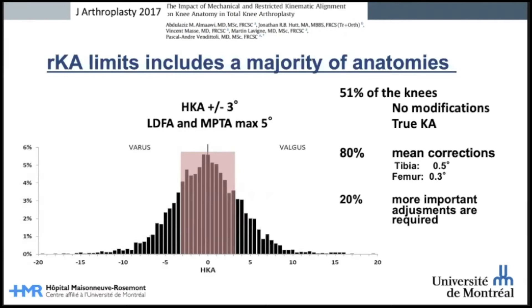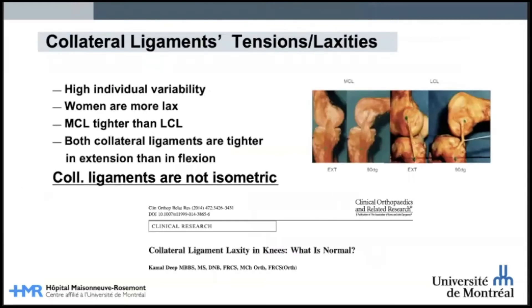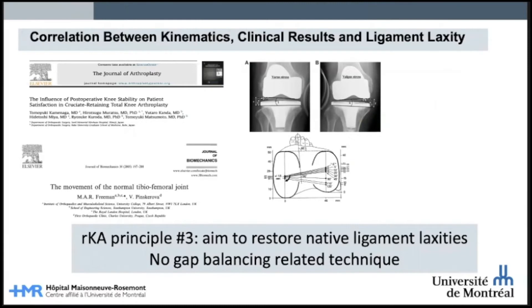When performing the anatomical modifications, the goal will be to minimize their impact on ligament laxity and joint kinematics. Most anatomical studies agree that collateral ligament tension is subjected to individual variability, but in general, females are more lax, MCL is tighter than LCL, and both collaterals are tighter in extension than in flexion. The key point is that in a native knee, collateral ligaments are not isometric. Restoring normal ligament laxities will favor joint kinematics and correlate in clinical studies with higher patient satisfaction and better clinical scores. Our third RKA principle is to restore native knee collateral balance and laxities versus aiming for ligament isometry.